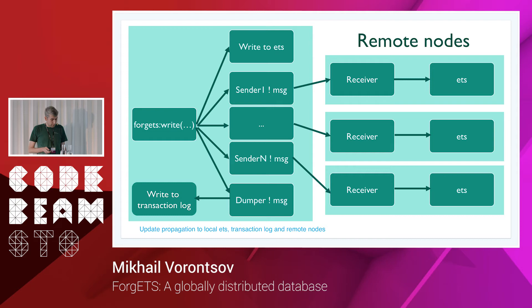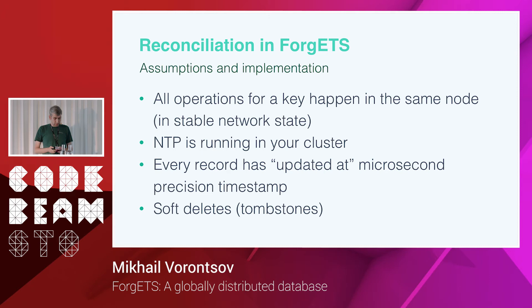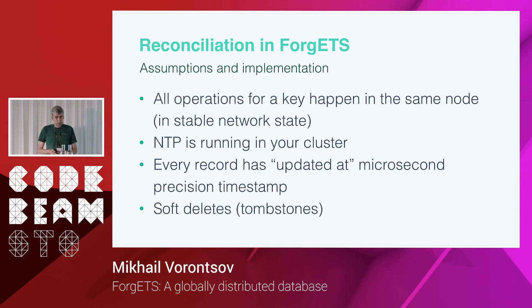Reconciliation is one of the central features of Vargets. To make it work, we have the following assumptions: all operations for a key happen on the same node in a stable network state — this is the most important property. NTP is running on your cluster, keeping clock differences between nodes small. These two facts allow us to use a microsecond-precision timestamp as a version for every record. Because records mostly stay on the same node, and even if they fail over the clock difference is small, this works well. Vargets also uses soft deletes, known as tombstones, to replicate deletions to remote nodes.